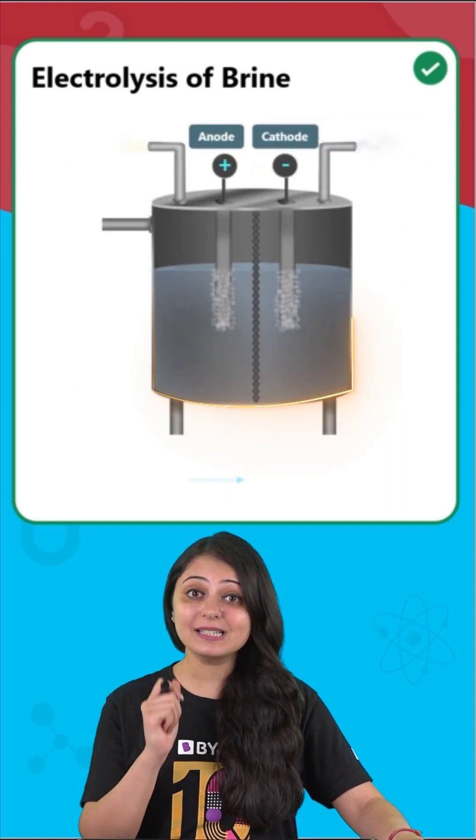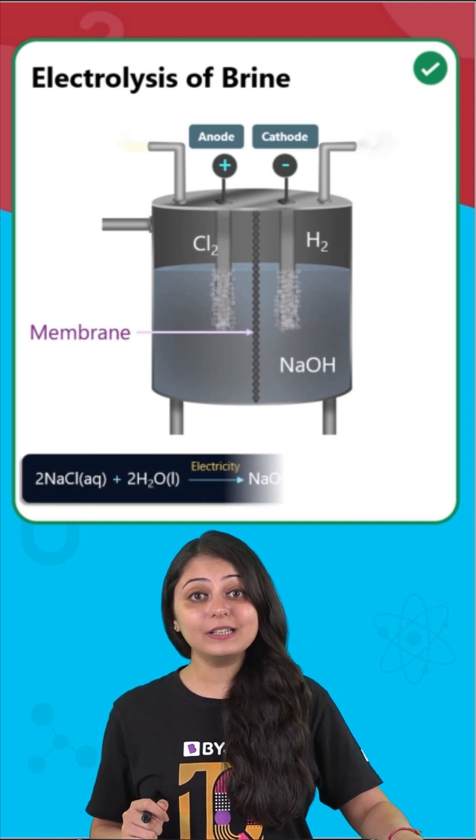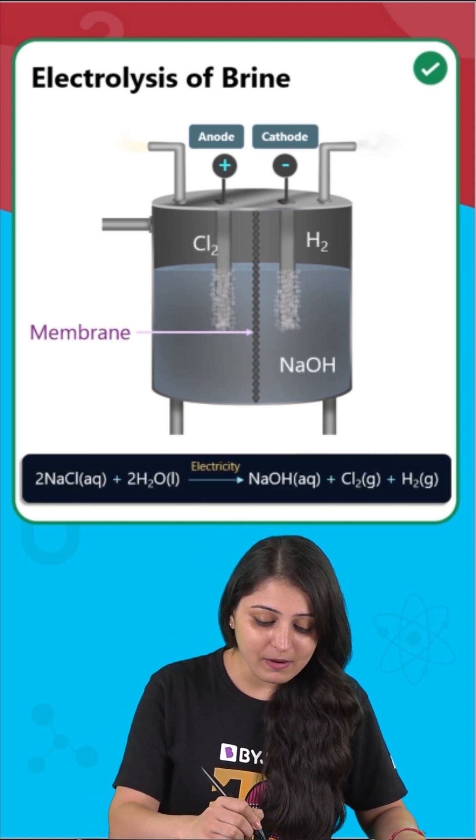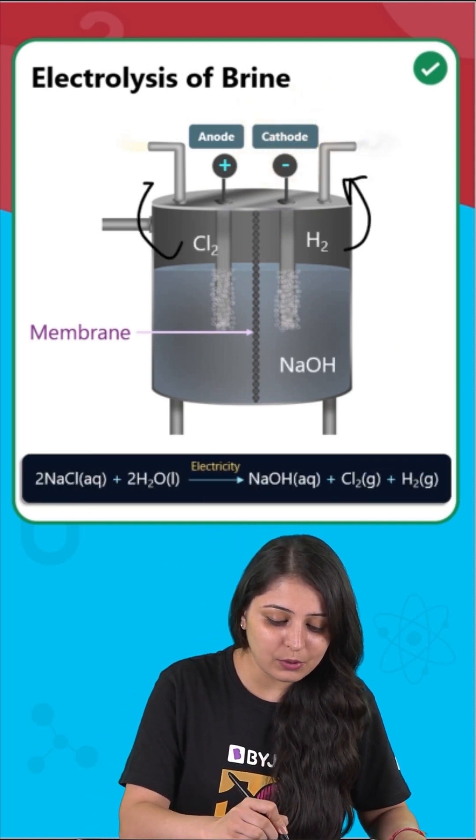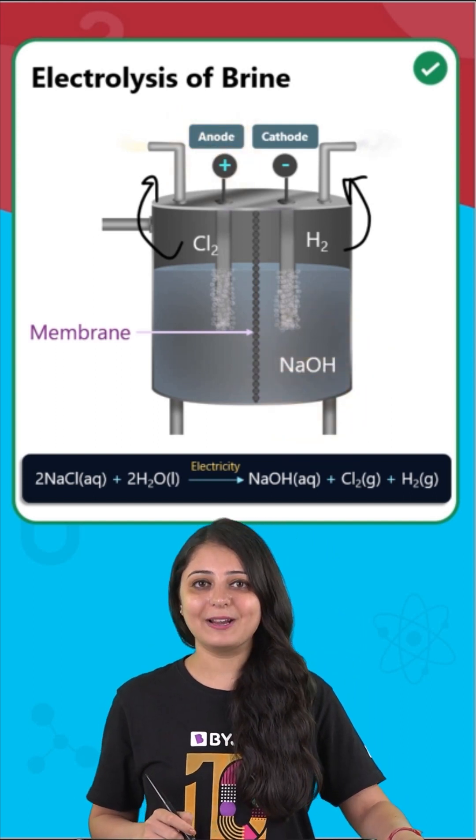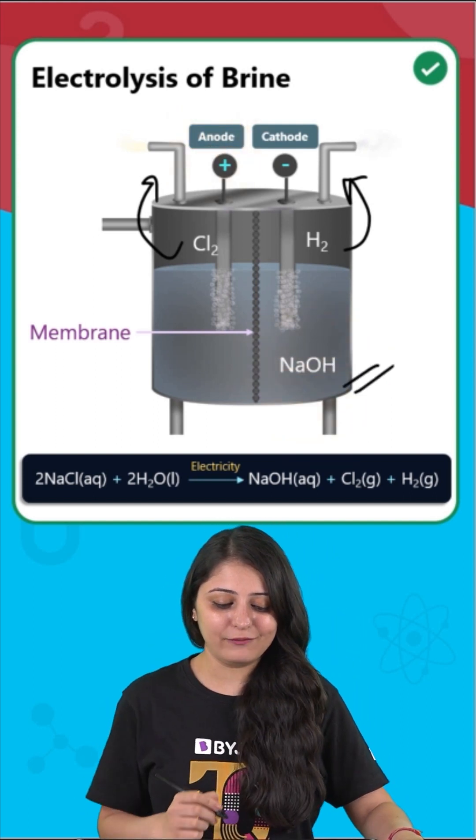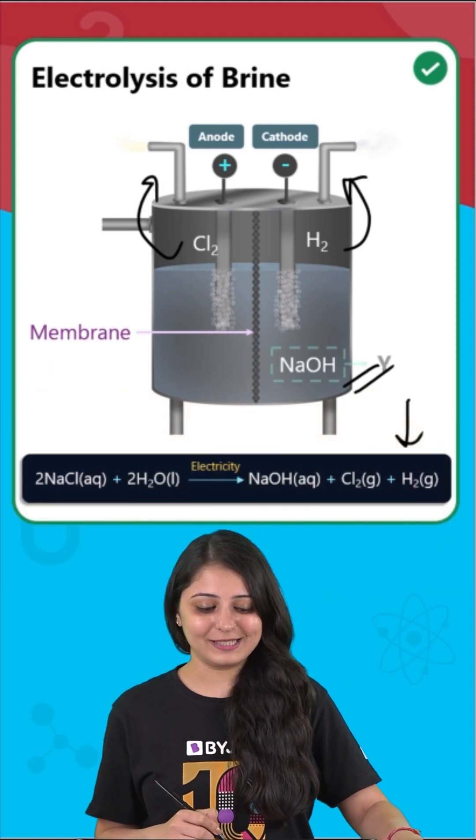And when electricity is passed through brine solution, it actually decomposes to form hydrogen at cathode, chlorine gas at anode, also sodium hydroxide near cathode is being formed, and this is the equation for the same.